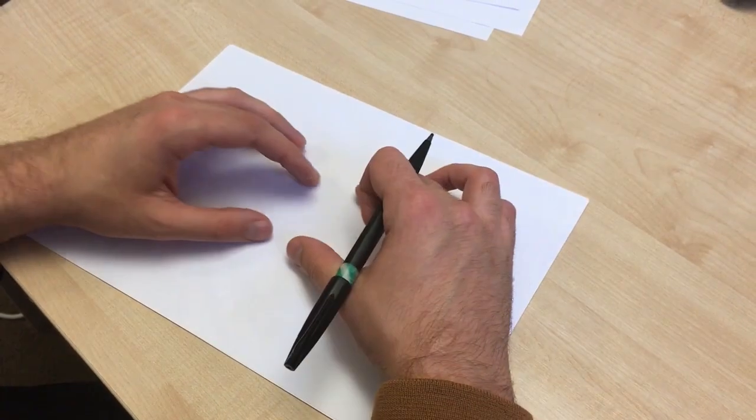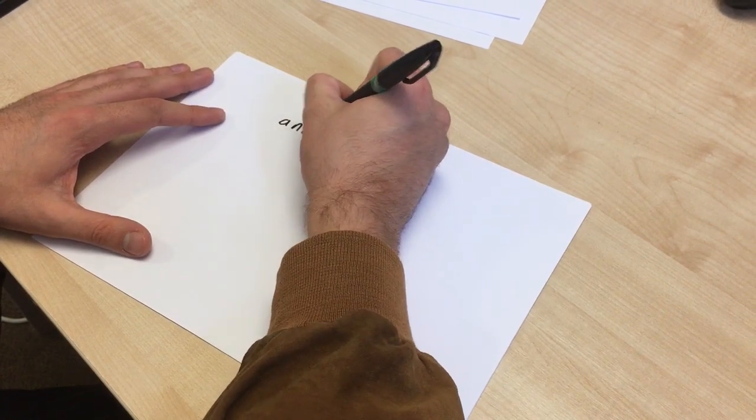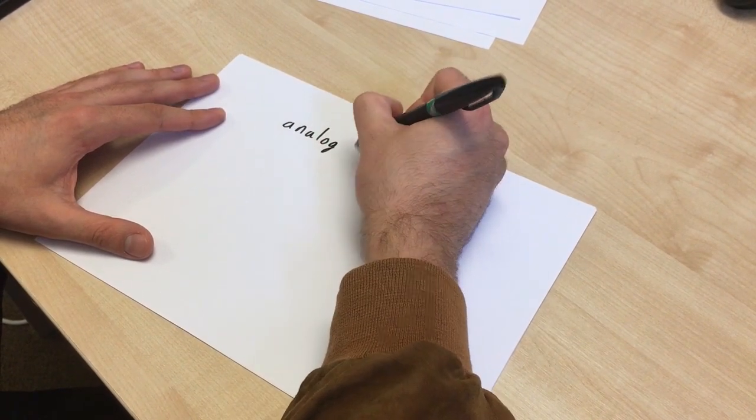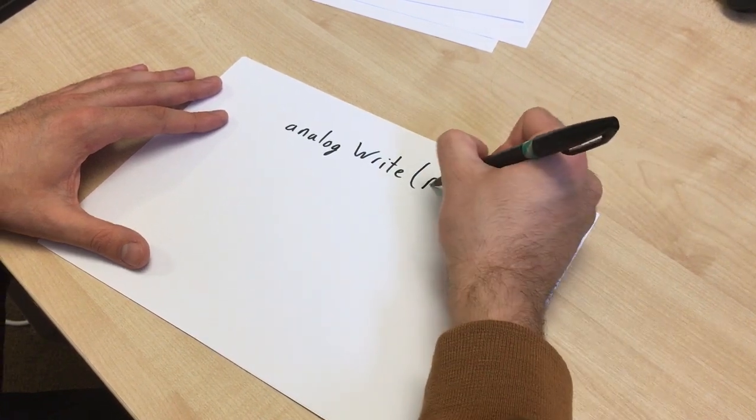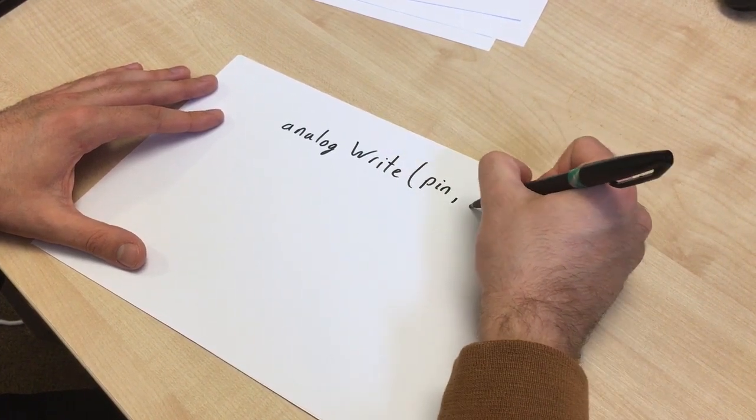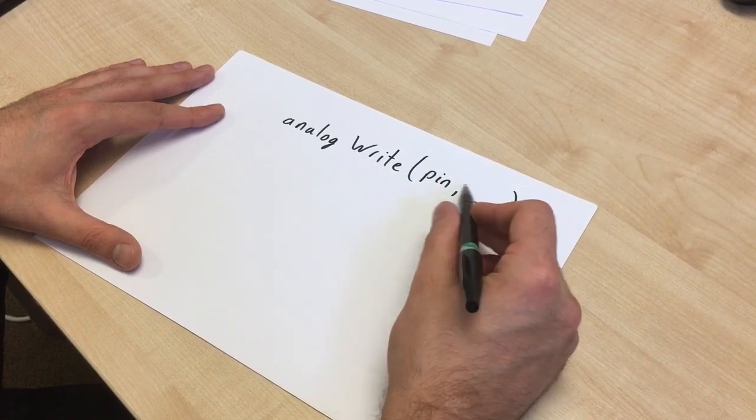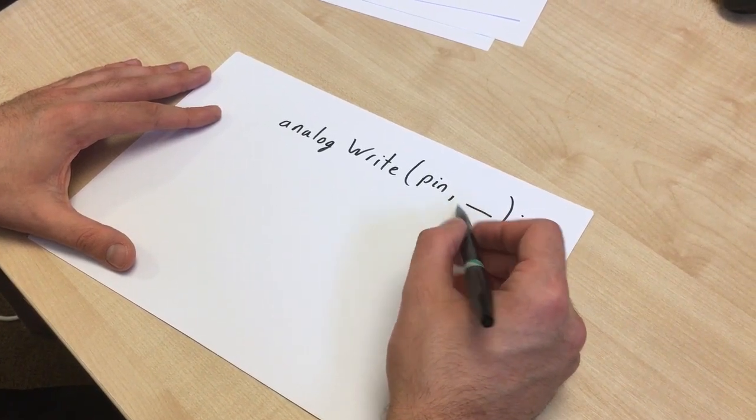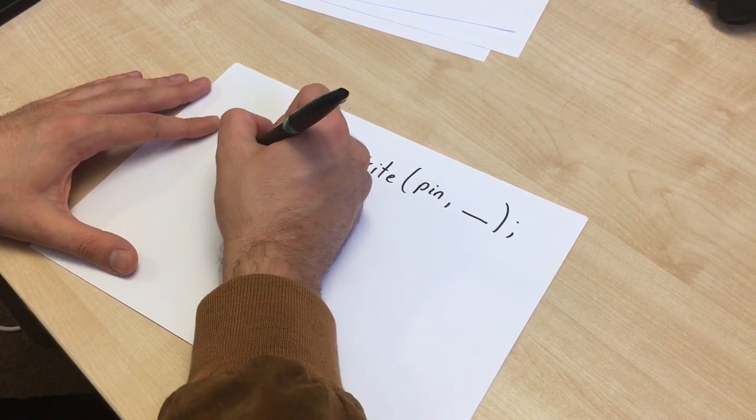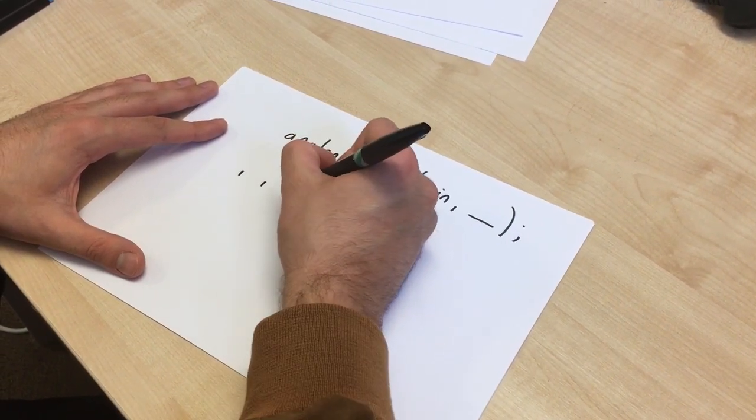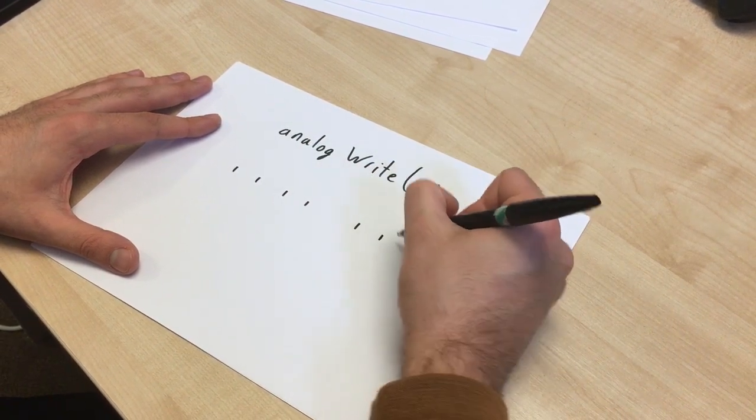So, if we do an analog write in our code, we write it like this. Analog write. Open our brackets. We say a pin number, and then we give it a number here. And this number is between 0 and 255. Now, the reason it's 255 is because of binary. If you take an 8-bit binary number, and I've done a separate video on binary, but I'll explain it quickly here again.